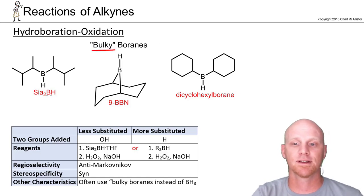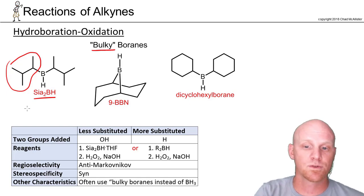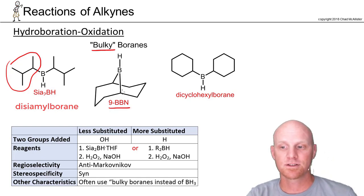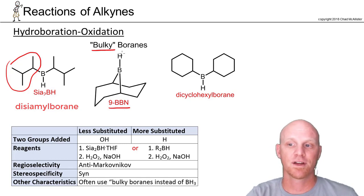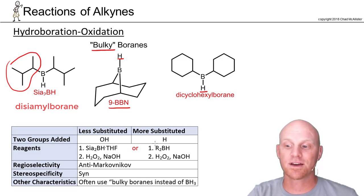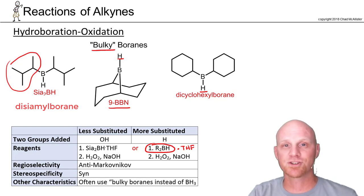Here are the bulky boranes you should recognize. Disiamyl borane contains two isoamyl groups and may be drawn out above the reaction arrow. Another common bulky borane is 9-BBN (9-borabicyclo[3.3.1]nonane) — boron has only one H and is quite bulky. You might also see dicyclohexylborane, where boron again has only one H and two large cyclohexyl chains. All of these can be written generically as R2BH, typically used with THF.